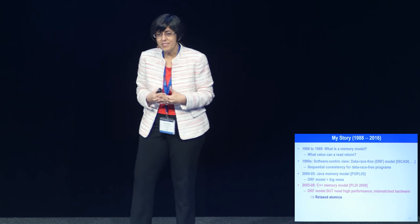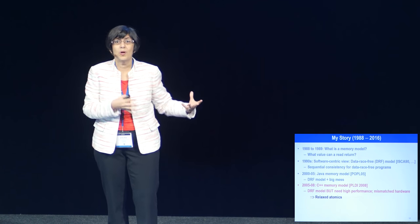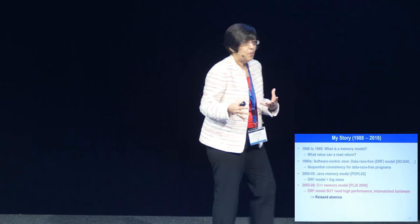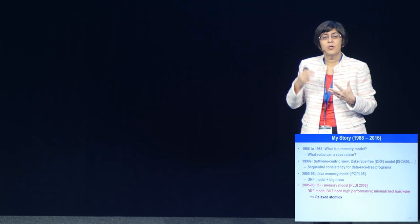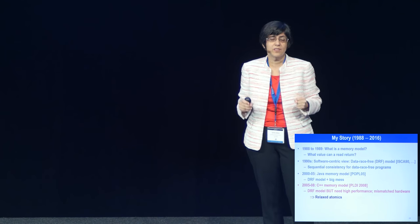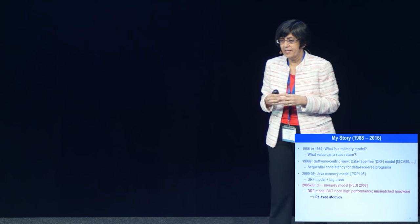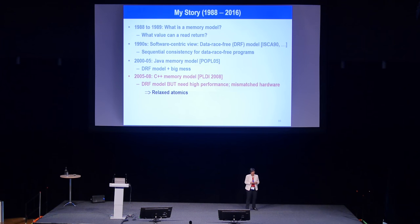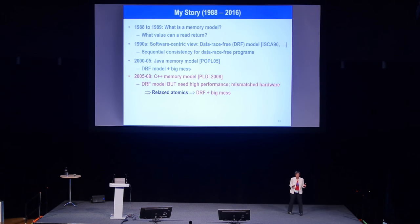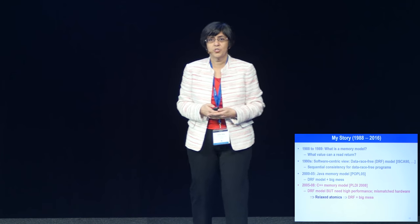It took a long time to convince people we wanted data-race-free as the core model. C++ is all about performance, and there's a mismatch between what DRF wants and what hardware provides. Some programmers wanted more relaxations than DRF could offer — these are called relaxed atomics — and these relaxations could give high performance with the hardware of that time. The result was DRF at the core, but this big mess with relaxed atomics. Again, people found problems with how relaxed atomics were specified. There's a bug in the specification that remains broken and has no solution yet.